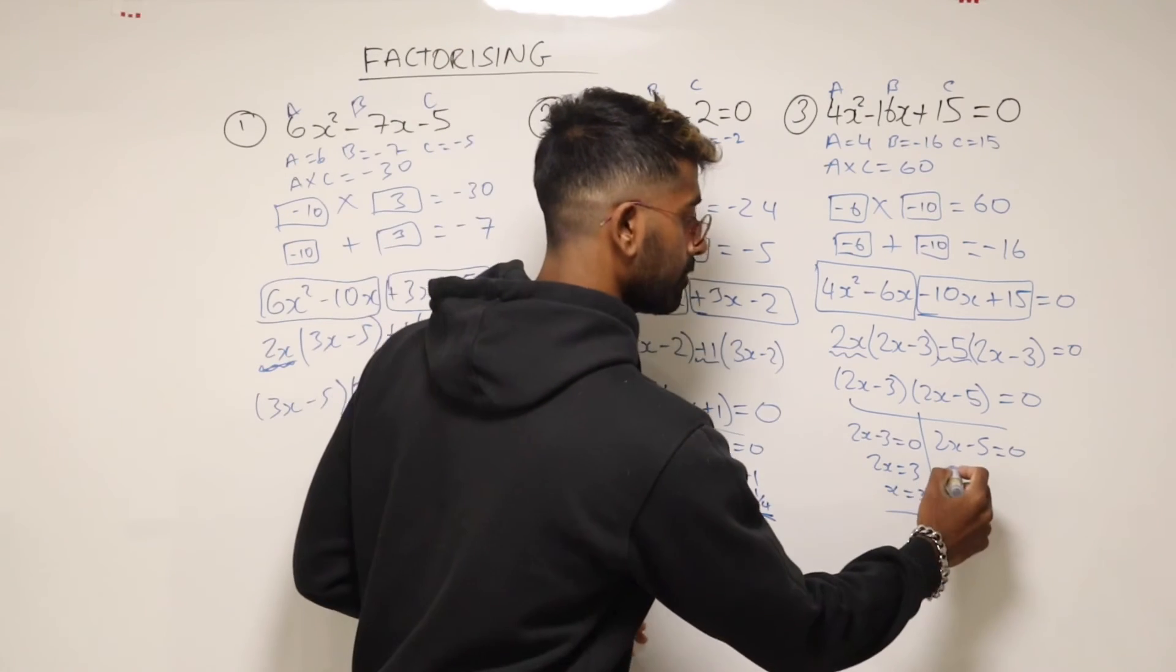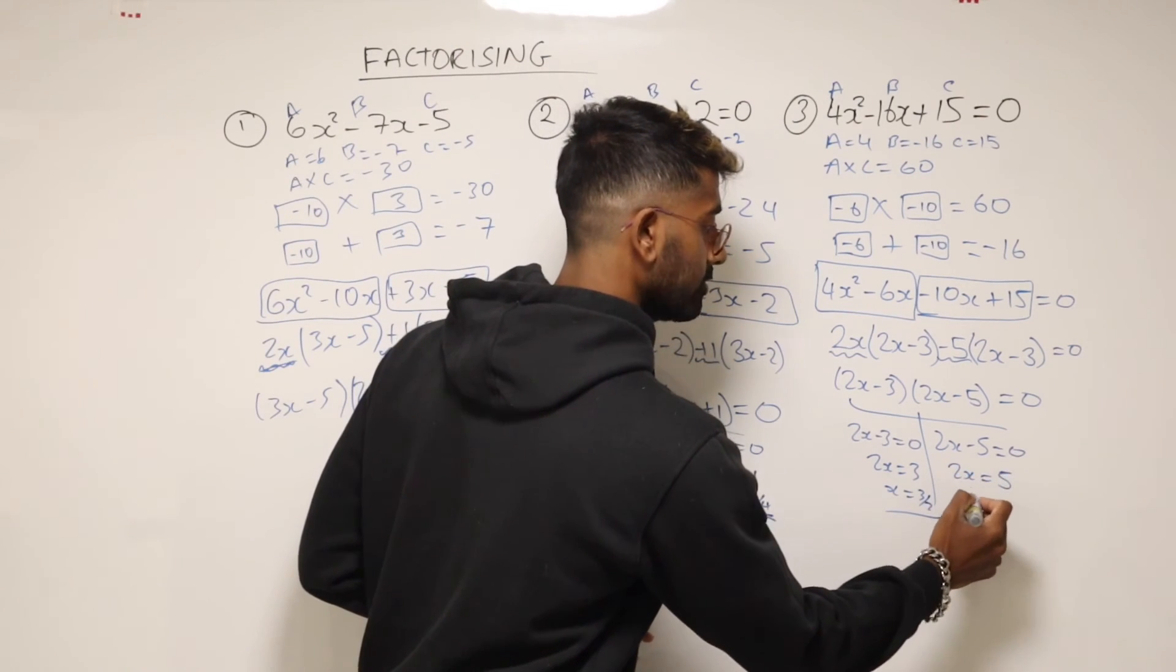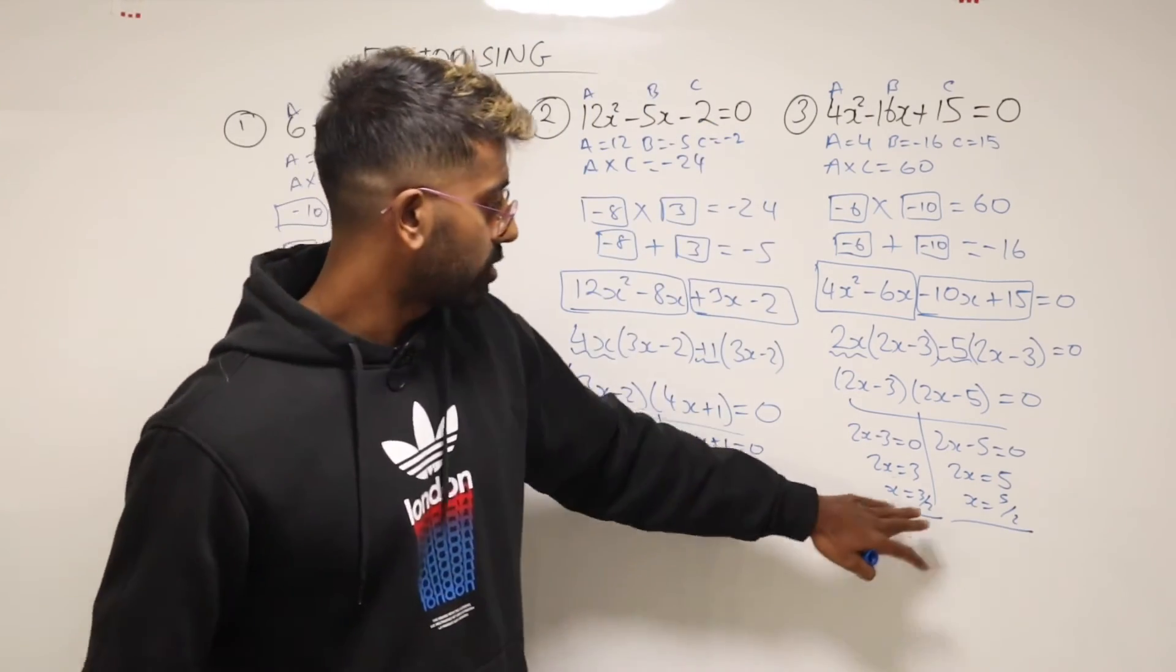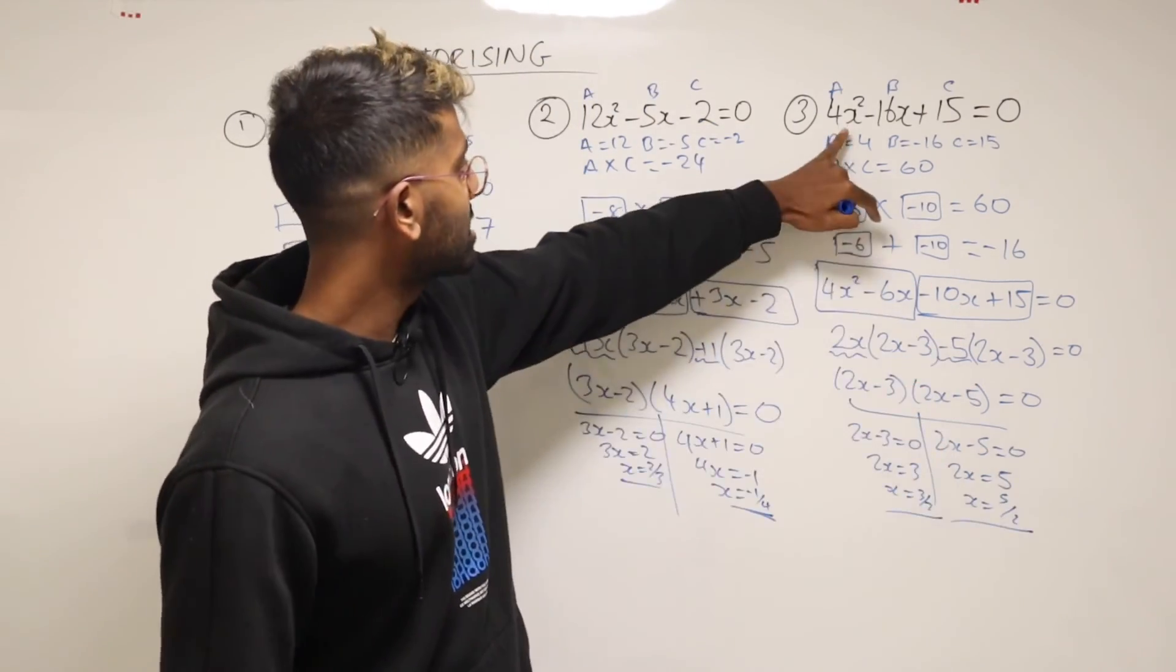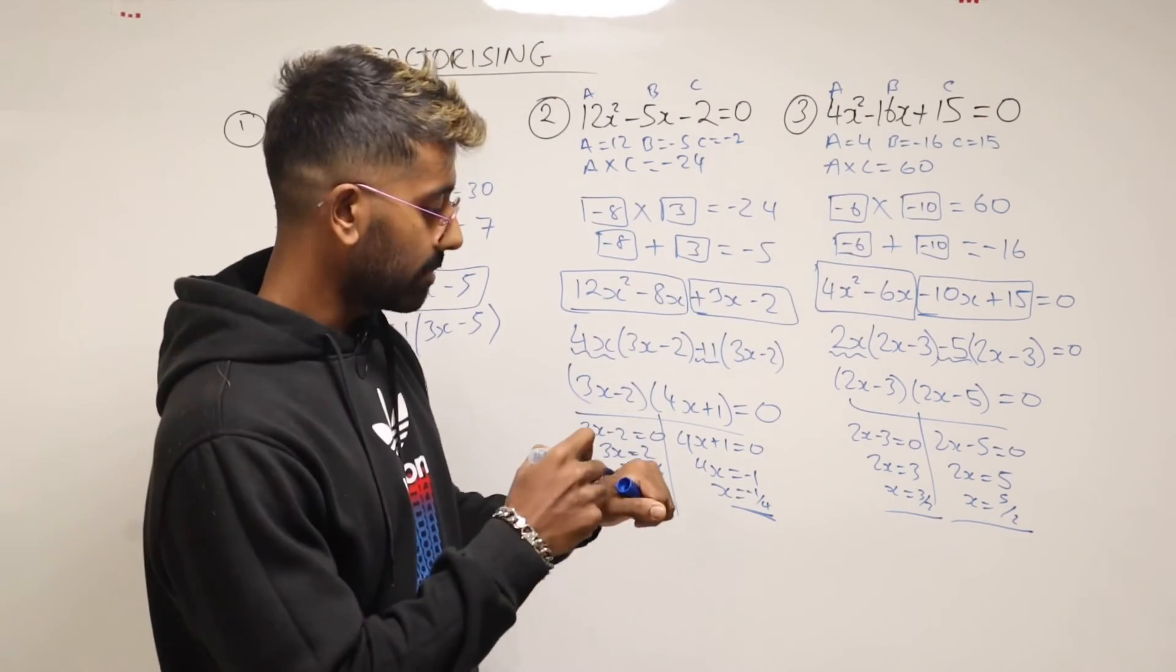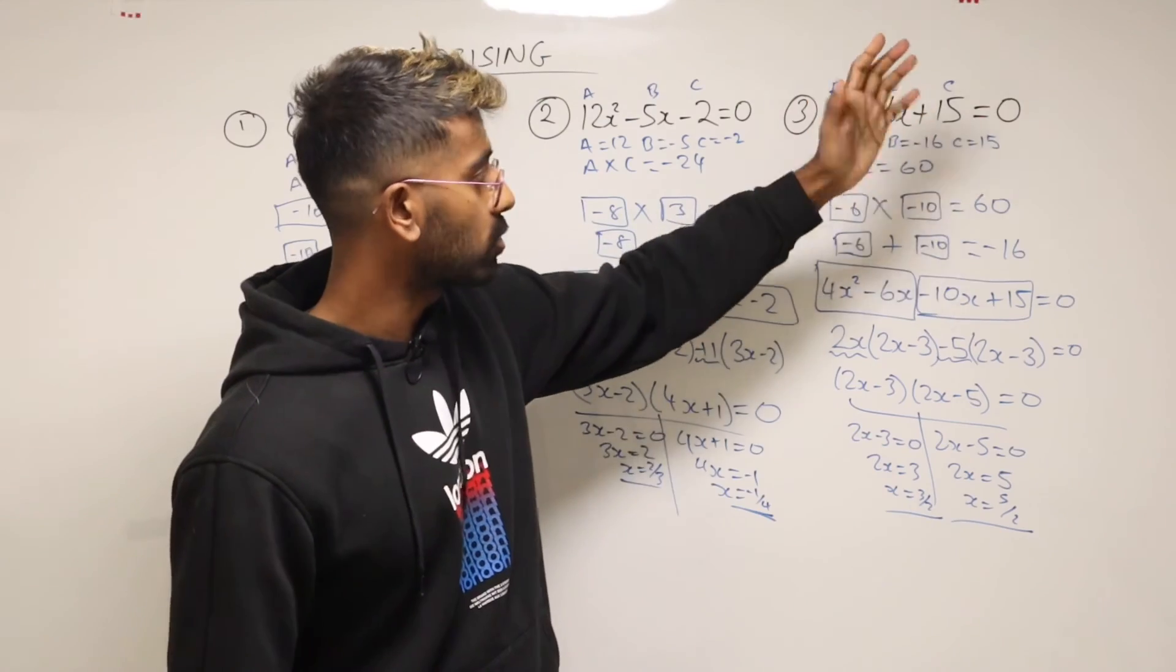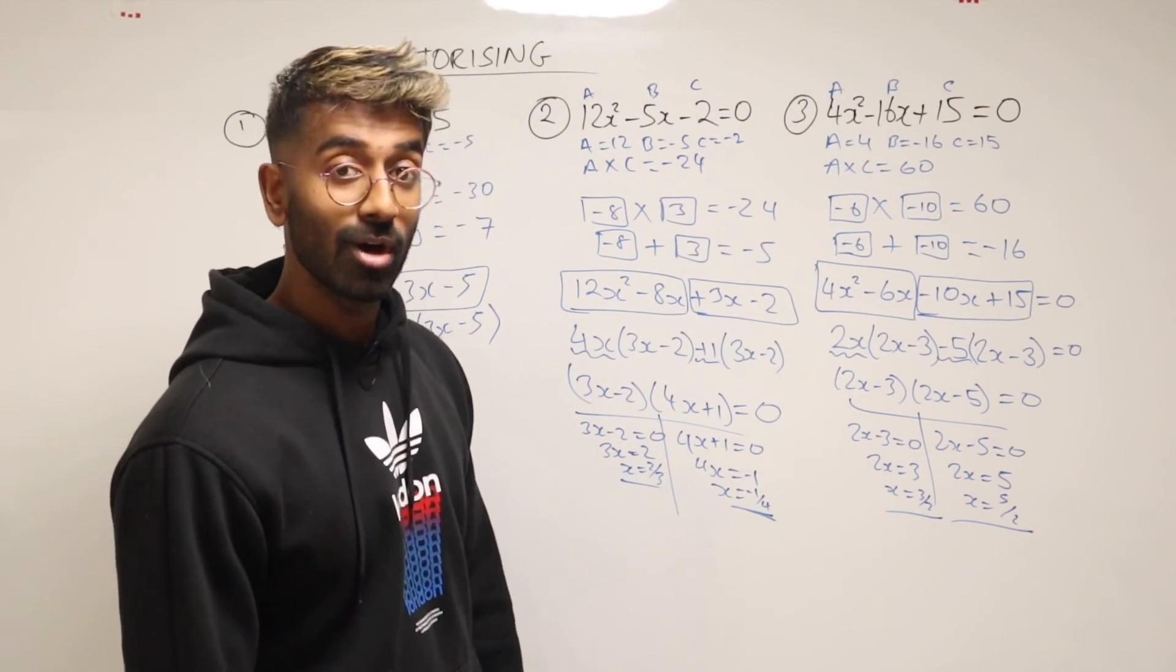Do the same with the next one. So you'll have 2x is equal to 5. And then x is equal to 5 over 2. And there it is. So again, you could take any of these x values, sub it into your original equation up here, and then hit equals, it should come out as zero. And that's how you can check if it's good or not.